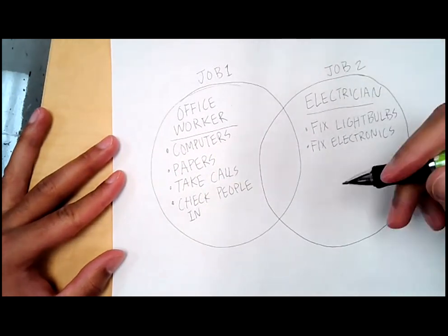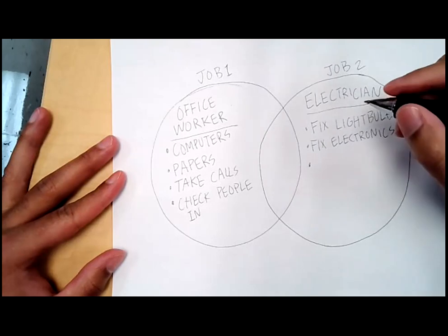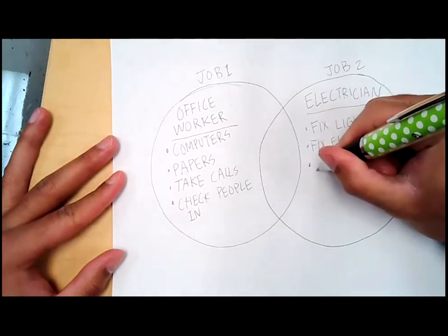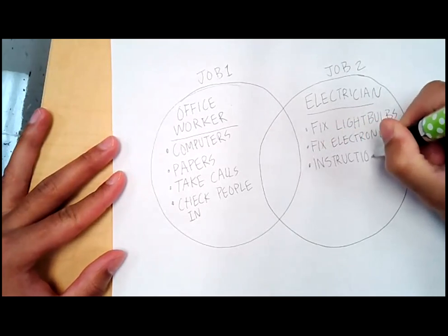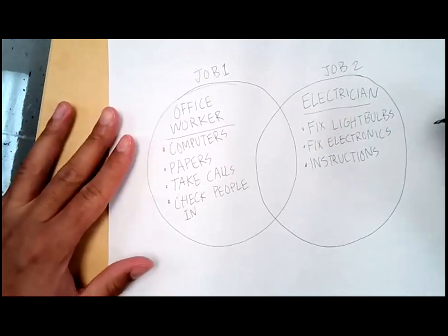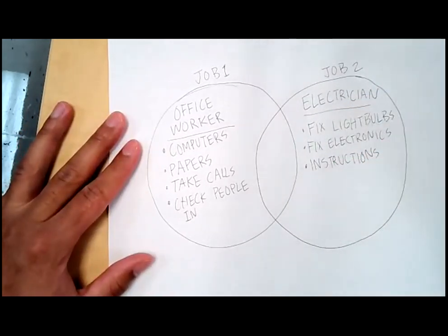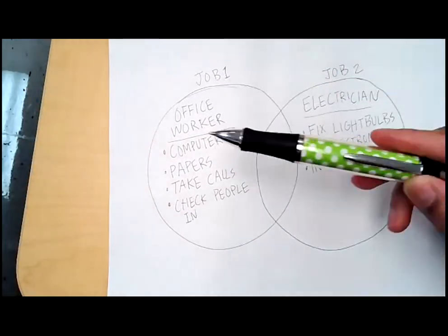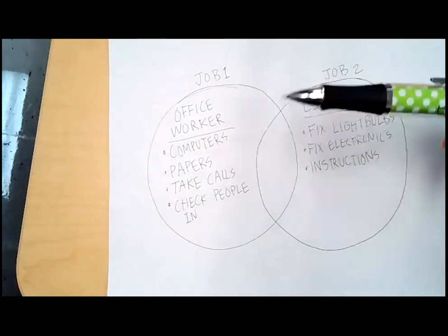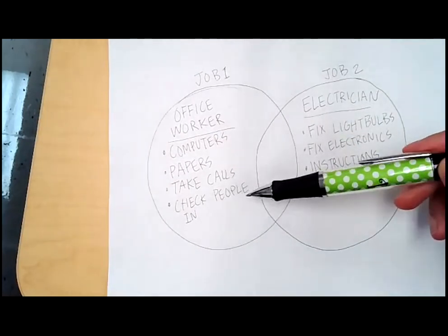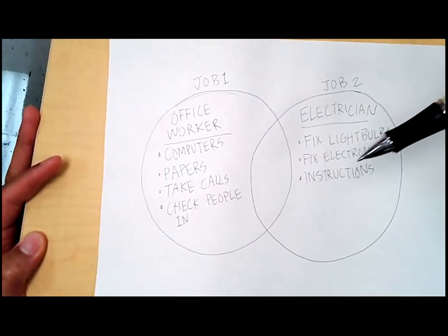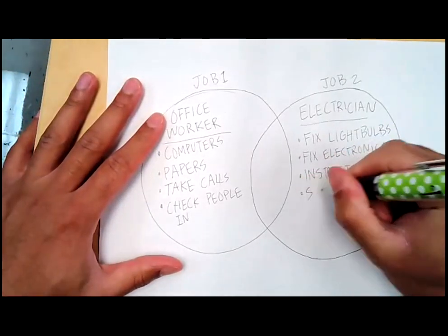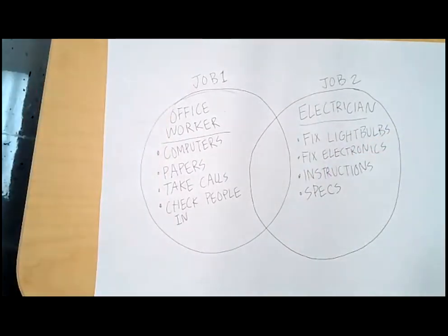Rosalinda, what's something else an electrician might work with or do at work? They have instructions for the object. Okay, they might work with certain instructions, like a manual or something like that — like the specs of something. So looking at these two jobs, we know a good bit about them. Office workers work with computers, papers they type out or print, take calls, and check people in. Electricians fix light bulbs, fix electronics, and might work with instructions or specifications, like a manual.